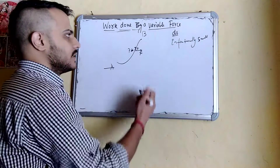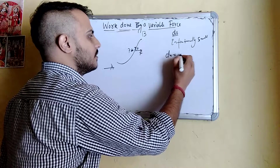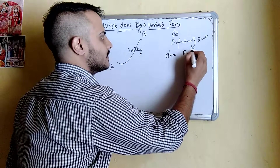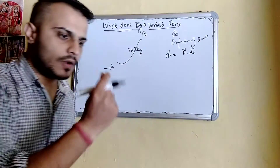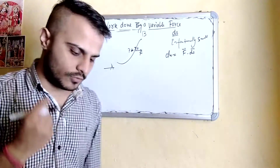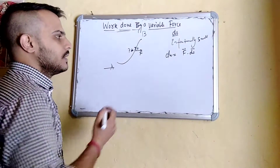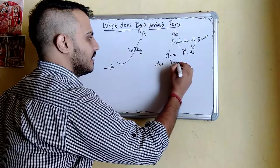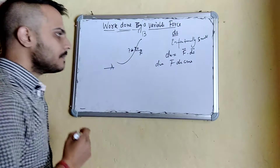So we can write the expression for work done over this very small displacement. We write dW equal to F dot ds, since we have taken a very small displacement and the force is assumed to be constant. So we can write this expression as dW equal to F ds cos theta.